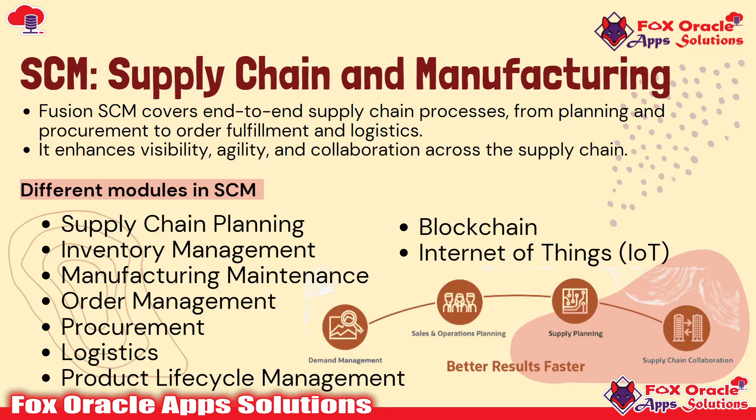Now let's discuss Supply Chain — SCM, that is Supply Chain and Manufacturing. Fusion SCM covers end-to-end supply chain processes, from Planning and Procurement to Order Fulfillment and Logistics. It enhances visibility, agility, and collaboration across the supply chain. In the Supply Chain offering, we have different modules: Supply Chain Planning, Inventory Management, Manufacturing and Maintenance, Order Management, Procurement, Logistics, and Product Lifecycle Management. We also have Blockchain and Internet of Things capabilities here.